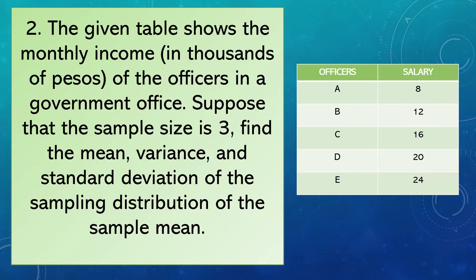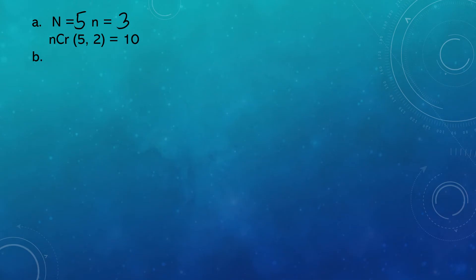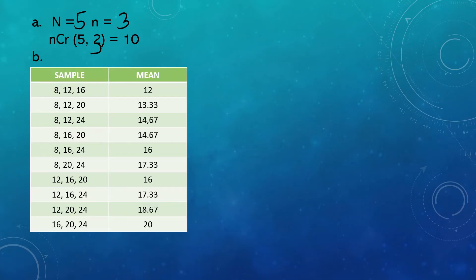Let's try another example. The given table shows the monthly income in thousands of pesos of the officers in a government office. The sample size is 3. Find the mean, variance, and standard deviation of the sampling distribution of the sample mean. We have 5 officers, so N = 5 and n = 3. Using the combination method, 5C3 = 10, so we need to list down 10 samples.